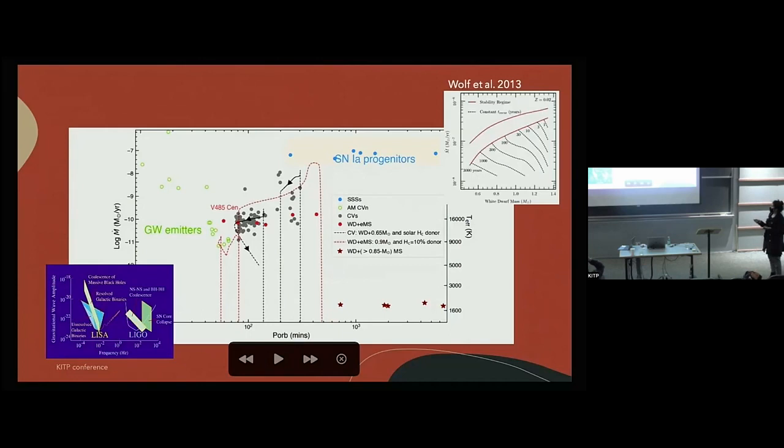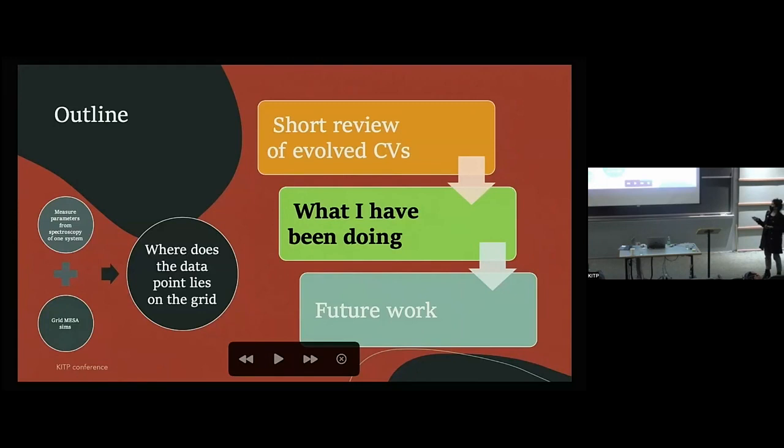The red points show CVs with evolved donors and as you see there is a horrible disagreement here. Here's another evidence that there are missing things in the CV evolution and the prescriptions need revision. This system here is the one I'll be talking about now, because I measured some parameters for this specific evolved CV, made some binary simulations, and see where my points fall in this grid.